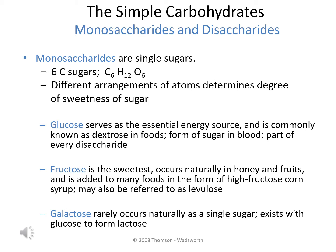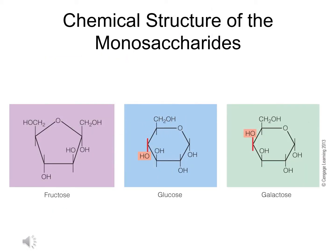The third monosaccharide is galactose. Galactose is a little different than the other two in that it is not very often found by itself in nature. Usually it exists combined with glucose to form lactose, lactose being a disaccharide. If we take a look at the chemical structures of these monosaccharides, note that glucose and galactose are very similar in their arrangement — the only difference is the placement of one single hydroxyl group.